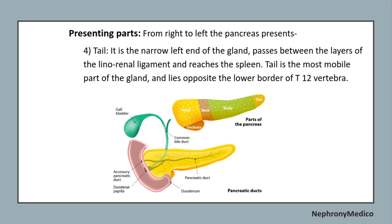The tail is the narrow left end of the gland which passes between the layers of the lienorenal ligament. It is the most mobile part of the gland and lies opposite the lower border of the 12th thoracic vertebra. In the picture you can see the different parts of the pancreas: tail, body, neck, head, and uncinate process.